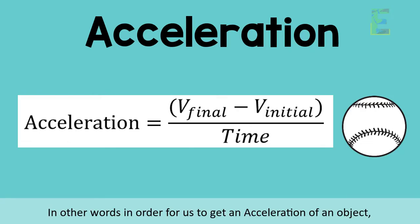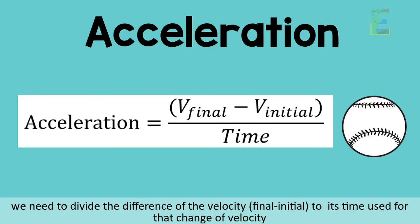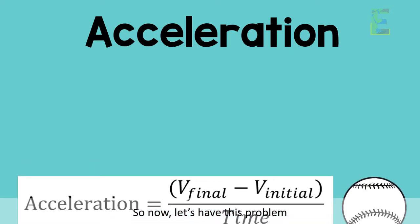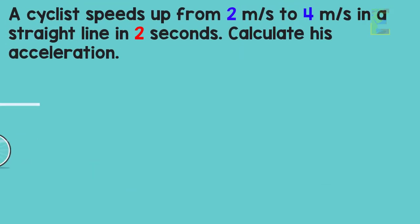In other words, in order for us to get an acceleration of an object, we need to divide the difference of the velocity (final minus initial) to its time used for the change of velocity.